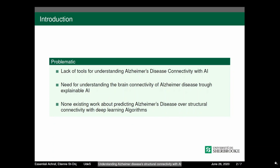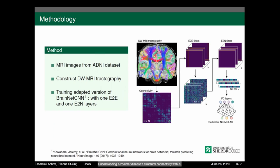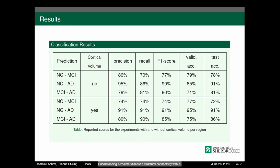It's a new work perspective of using explainable AI instead of developing new complex algorithms. By training an adapted version of BrainNet on reconstructed DW-MRI tractography over MRI images from a dataset, we could achieve very good classification performance while fine-tuning the model's hyperparameters.